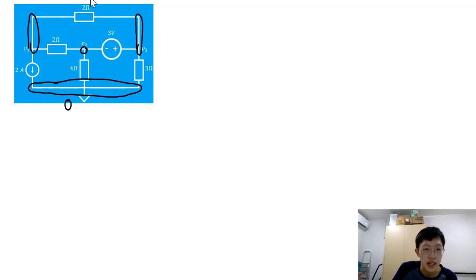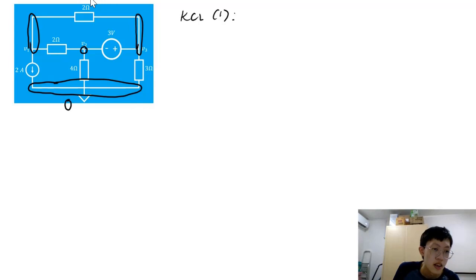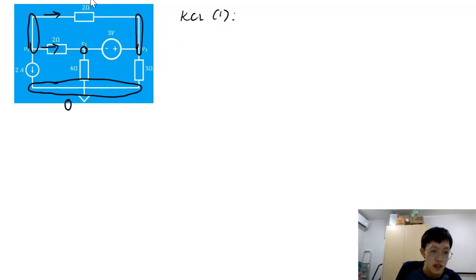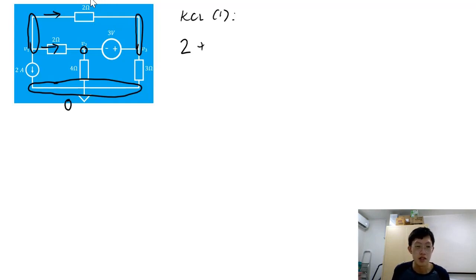Now we can start to write the KCL equation for each node. Starting with KCL for node 1, remember that KCL states that the currents entering the node must equal the currents leaving the node. We have to identify the currents entering and leaving node 1. Since we don't know what these branch currents are directed to, we'll assume that they move outwards. For delta V, we use the formula V_start minus V_n.